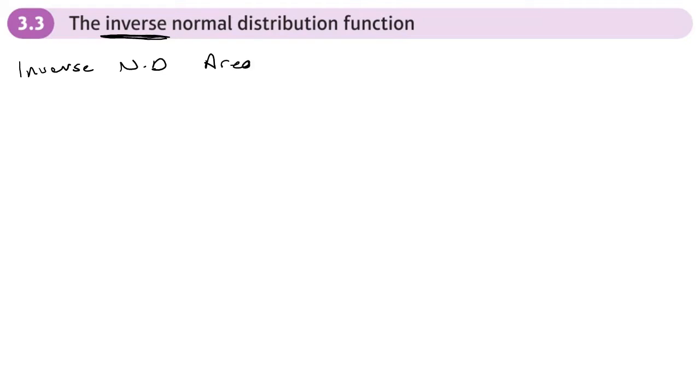This is the third lesson on the normal distribution. Today we're looking at the inverse normal distribution. In all of the questions we've done so far, we've used upper and lower values to find the area. Today we're going to be doing the opposite — we're going to be using the area to find the upper or lower limit. That's why it's called the inverse normal distribution.